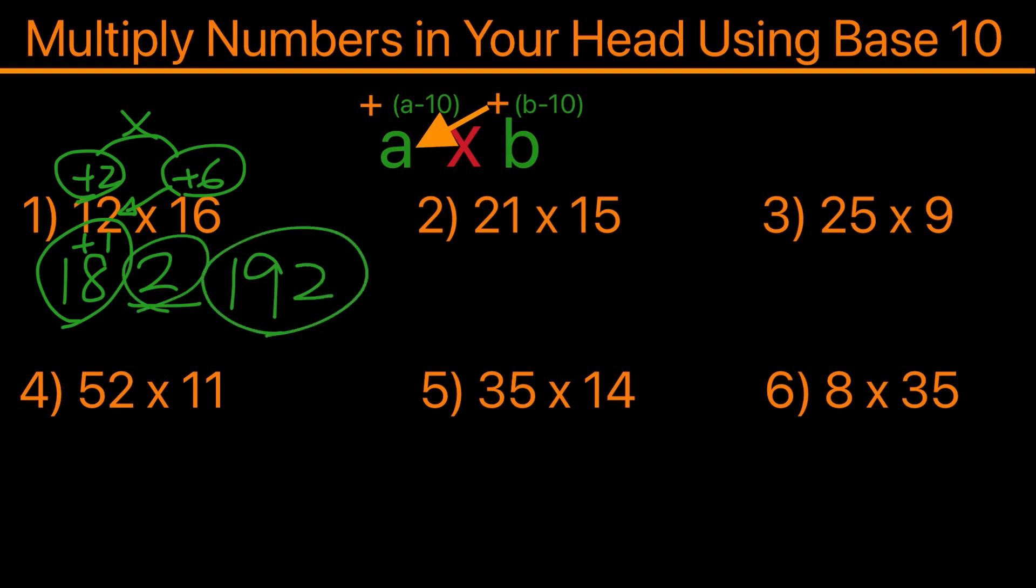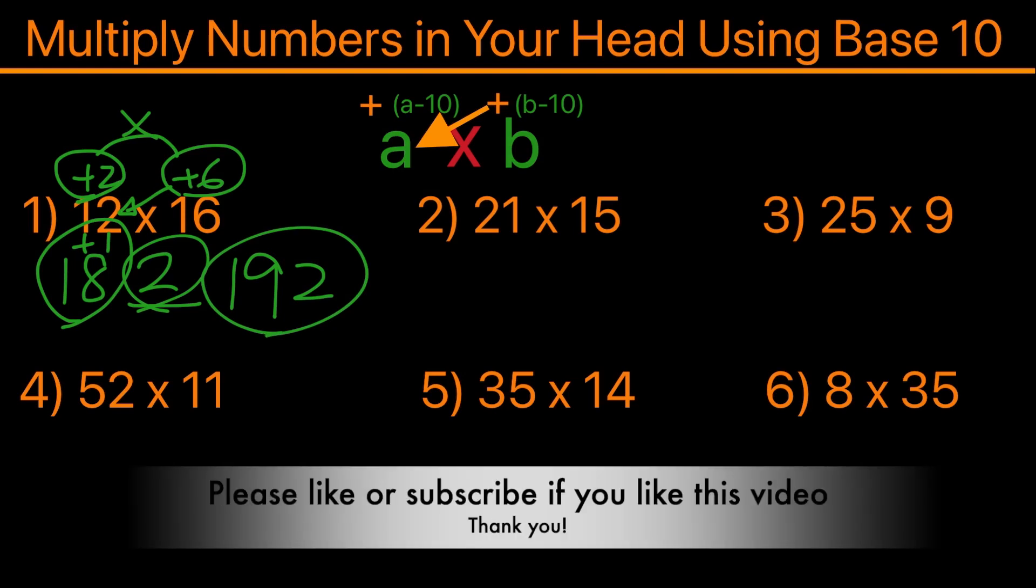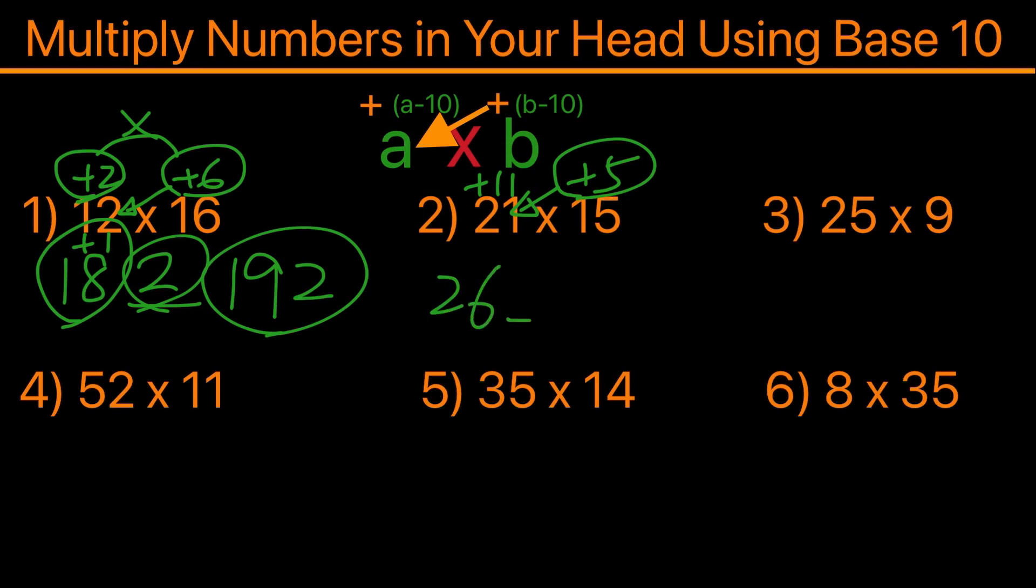Now let's try the second example, 21 times 15. So 21 is 11 above 10, and 15 is 5 over 10. We'll take 21 plus 5 which is 26, one space behind. 11 times 5 is 55, so we'll put 5 here and add a 5 above. So 26 plus 5 is 31, and the 5 will be here, so we have 315.